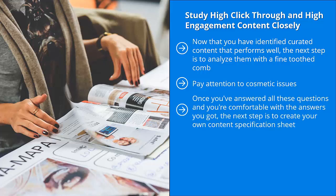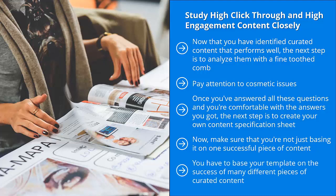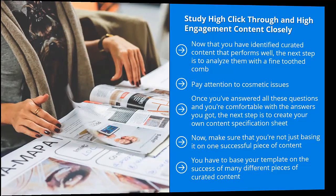Once you've answered all these questions and you're comfortable with the answers, the next step is to create your own content specification sheet — this is going to be your template. Make sure that you're not just basing it on one successful piece of content. That third-party content might be a fluke; the company behind it might just have gotten lucky and that piece went viral. You have to base your template on the success of many different pieces of curated content, so you can be more confident that even if you barely comply with all the specifications, you would at least get some decent and positive results.